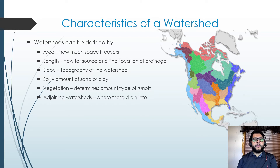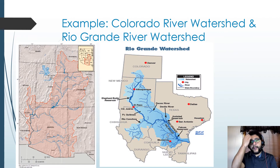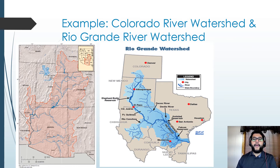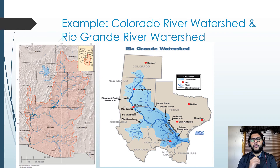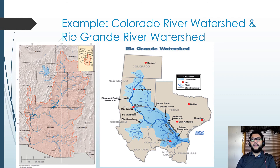You also have adjoining watersheds, which is where these drain into. Here's a good example: on the left you have a picture of the Colorado watershed, which starts in Wyoming, Colorado, and Utah, and drains somewhat towards the west into Arizona and further south into New Mexico and Mexico, and parts of California. What's interesting is this watershed not only drains towards the west, but also drains towards the east down the Rio Grande River watershed, which starts in the same locations but takes a turn towards El Paso and then down towards the Gulf of Mexico. So a watershed does not always drain in just one simple direction.